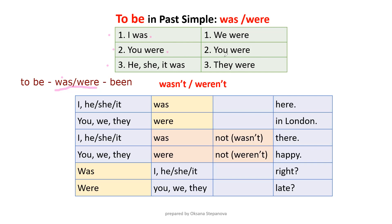When you remember this, it will be easier for you to learn past continuous tense, because past continuous has the verb 'to be' as part of its grammar structure.